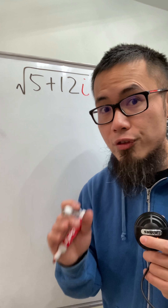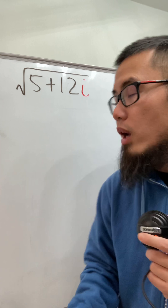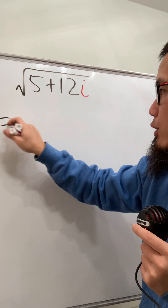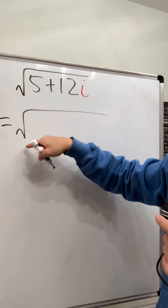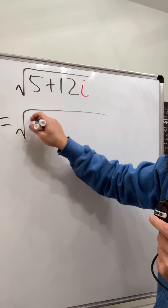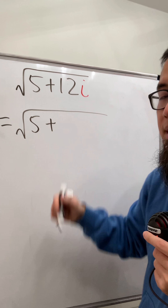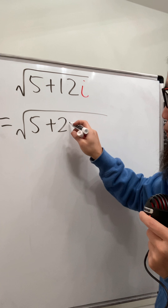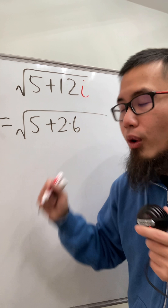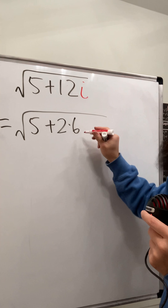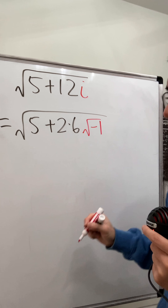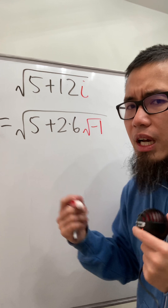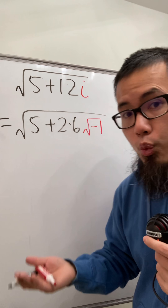Here we will see how to find the principal square root of 5 plus 12i. First we are going to rewrite this into a nested square root. So we still have the square root of 5 and then plus, but we want to have a 2 right here, so we break down the 12 as 2 times 6. And we know i is the same as square root of negative 1.